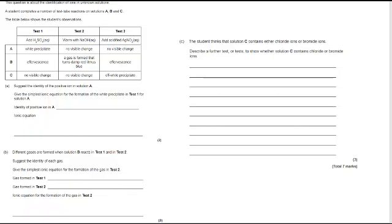So, here's the question. Unpause when you're ready. We've got here a question about the identification of ions in unknown solutions, A, B, and C, and we're carrying out tests 1, 2, and 3. You can see those in the table. Suggest the identity of the positive ion in solution A. So we're looking here at adding sulfuric acid to something where the positive ion is going to give rise to a white precipitate.